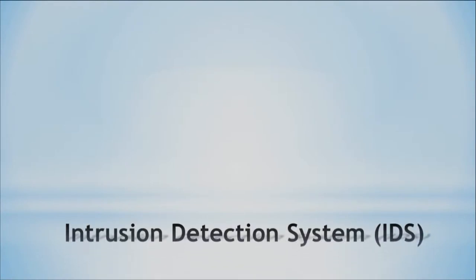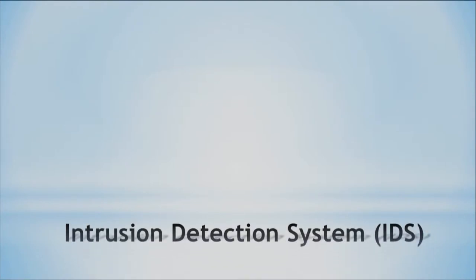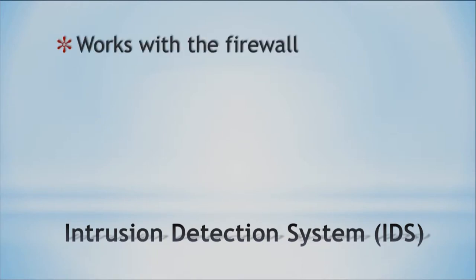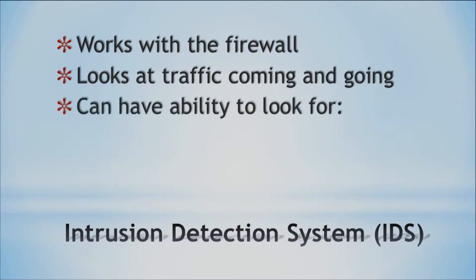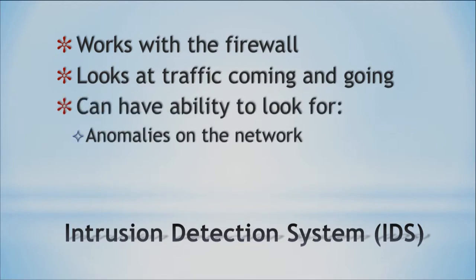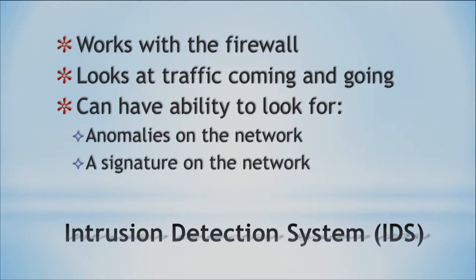The next device is an intrusion detection system, which we abbreviate as IDS. This works in conjunction with our firewall, analyzing traffic coming and going, looking for anomalies — things that are not normal traffic on our network. Our firewalls aren't smart enough to look for that, but our IDSs are. They can look for different occurrences in our network and report them, or look for attack signatures on our network. This device helps work with our firewall to improve our security.